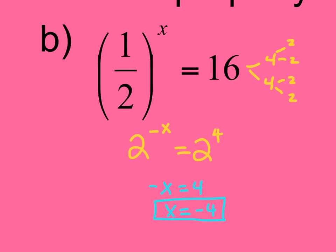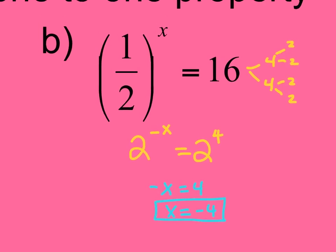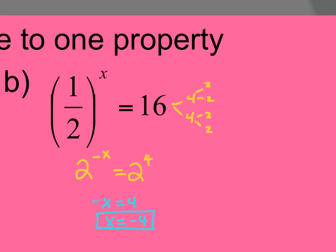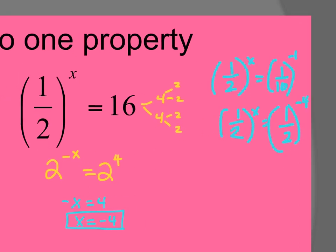So then I get that the exponents can be set equal to each other and x equals negative 4. You could keep the fraction, if you keep 1 half, and you want to move 16 to the bottom, then it would be negative 4. That's why I was saying you could do this more than one way. It just depends on how you see it. Both work.